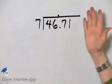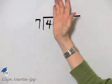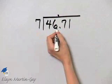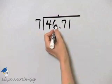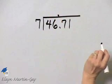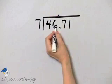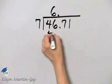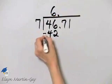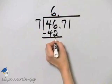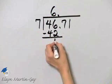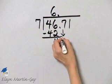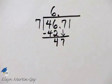And we simply start dividing. I can't divide 7 into 4. What about 7 into 46? Well, yes, we can do that. 6 times 7 is 42, and 7 times 7 is 49, so let's go with 6. 6 times 7 is 42, and then my remainder or my difference is 4. It's less than 7, so I'm okay, and I'll bring down the next digit, which is a 7.